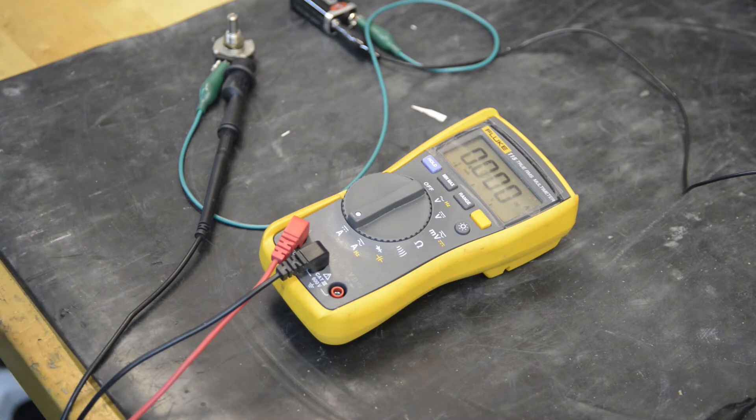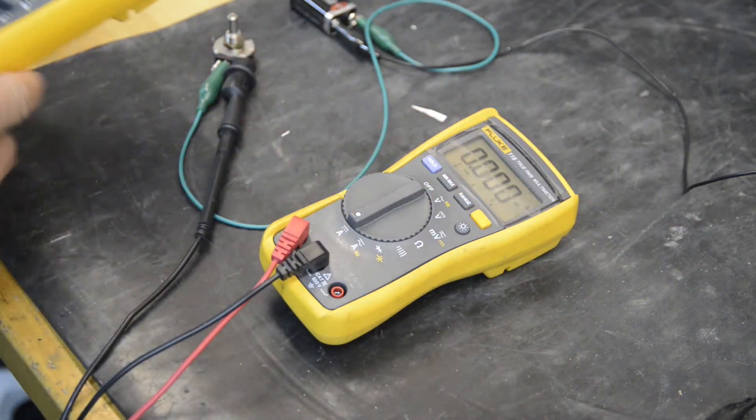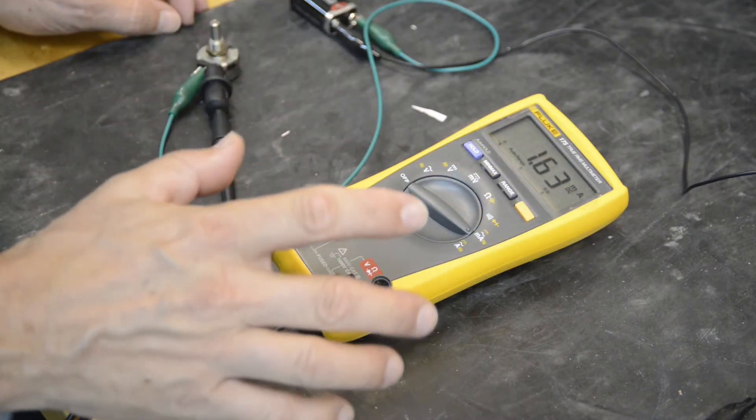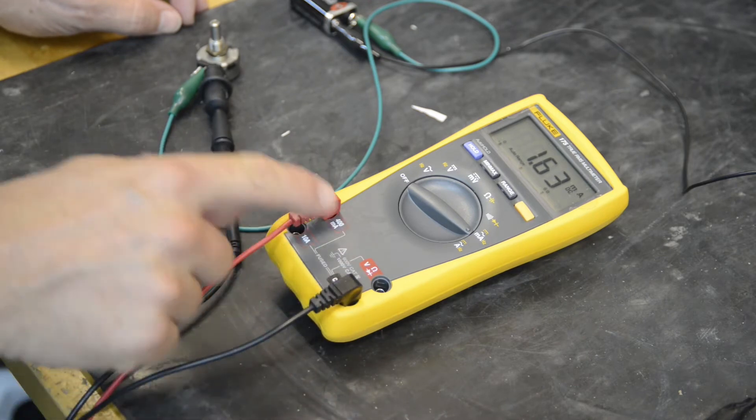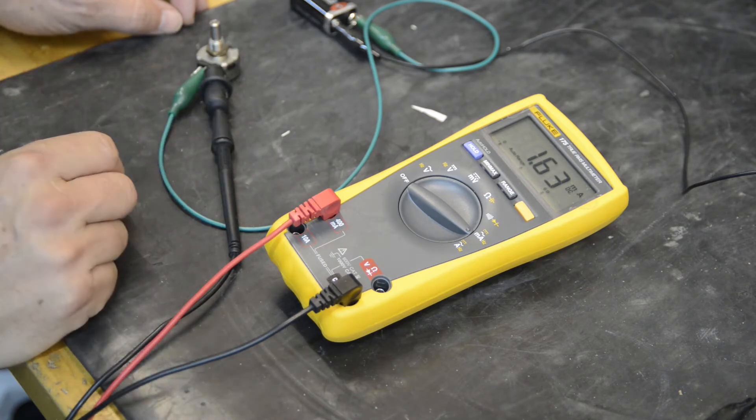So I'll hook in another multimeter that I know is a good one and show you what it should look like, and then we'll troubleshoot this one. So this is a known good multimeter, and I've got it hooked up. This one just happens to have a milliamp setting, which is a lot more sensitive than the regular amp setting.